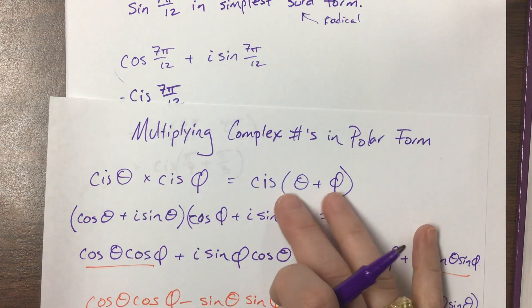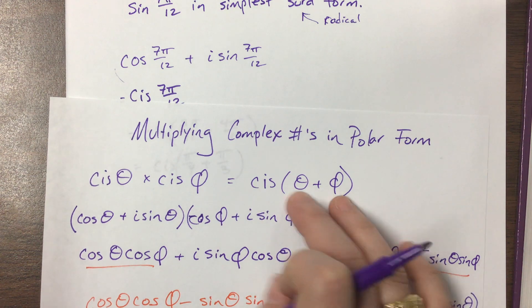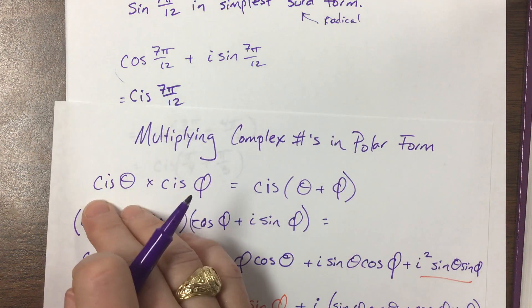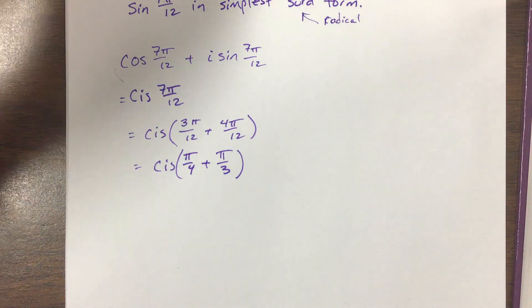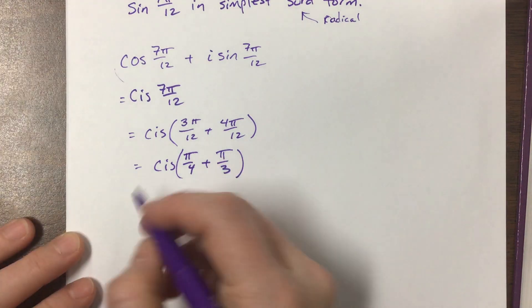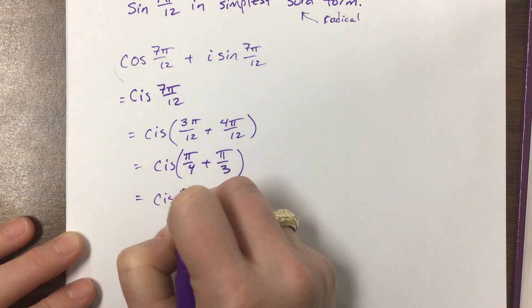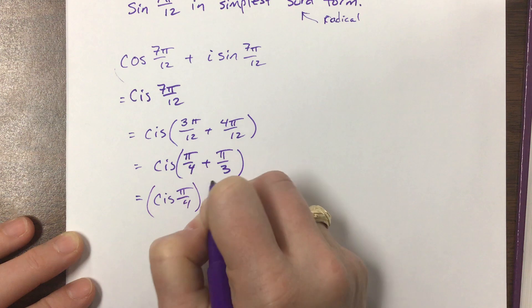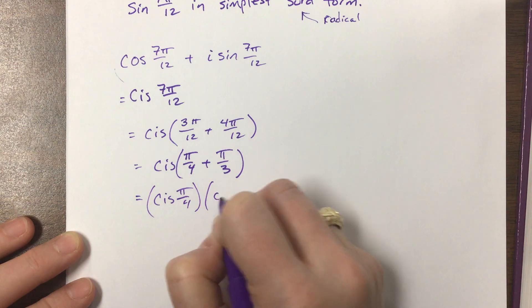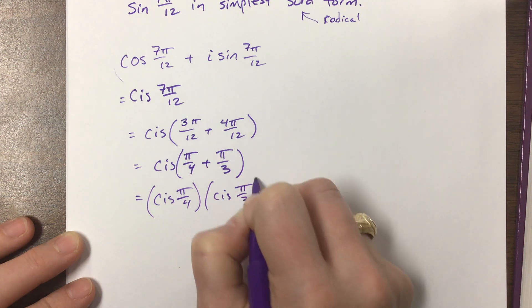Since we've got cis of two angles being added together, we can say it's cis of one times cis of the other. So this would be equal to cis of π/4 times cis of π/3.